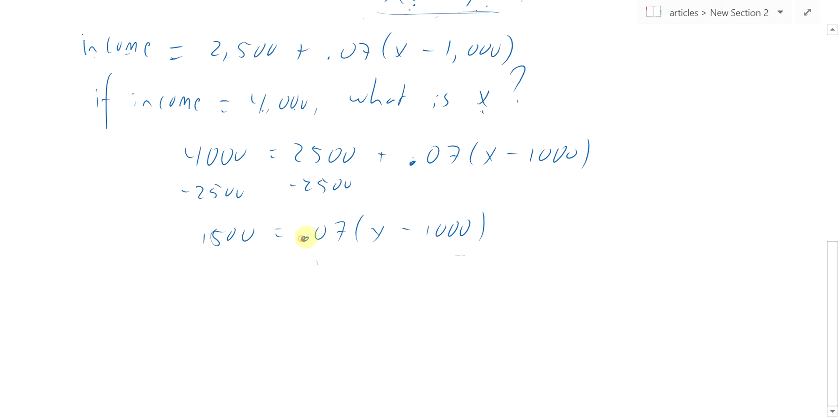So how can we solve this for X? You could distribute and then subtract, but it might be easier in this case just to get rid of the 0.07 by dividing both sides by that first.